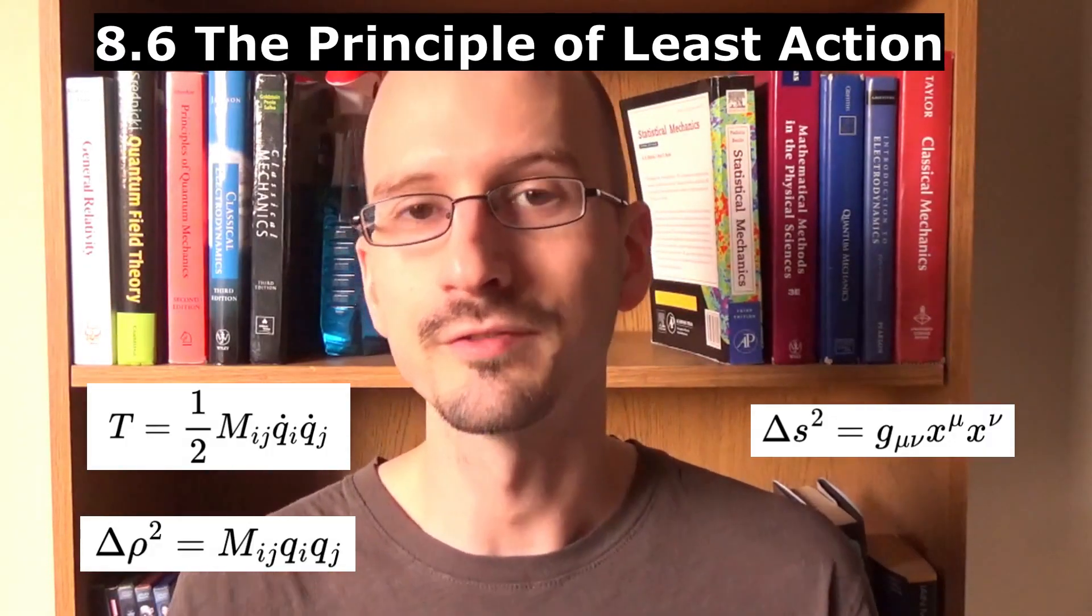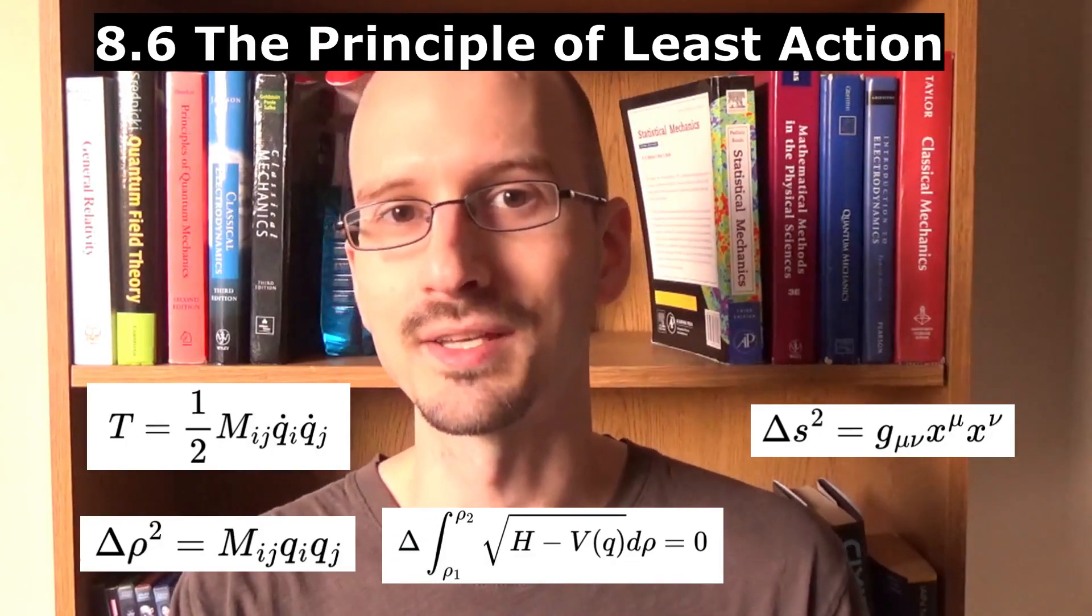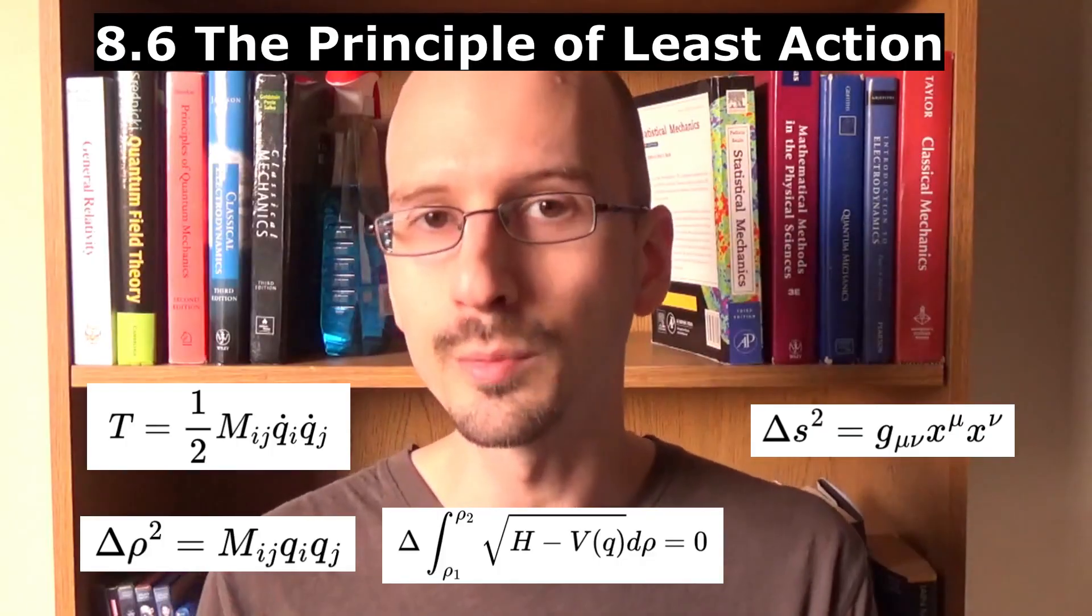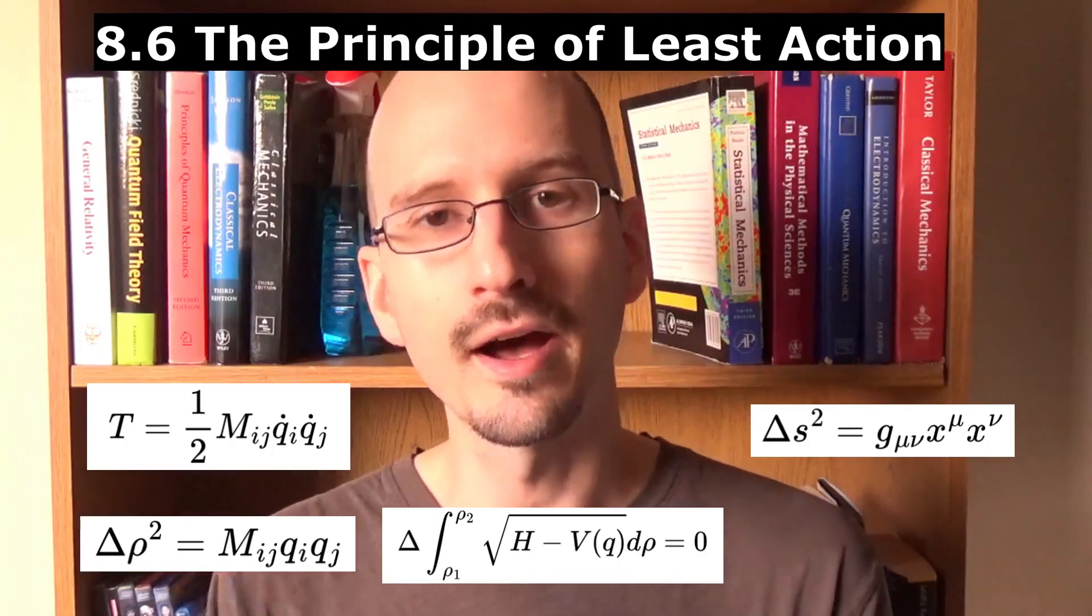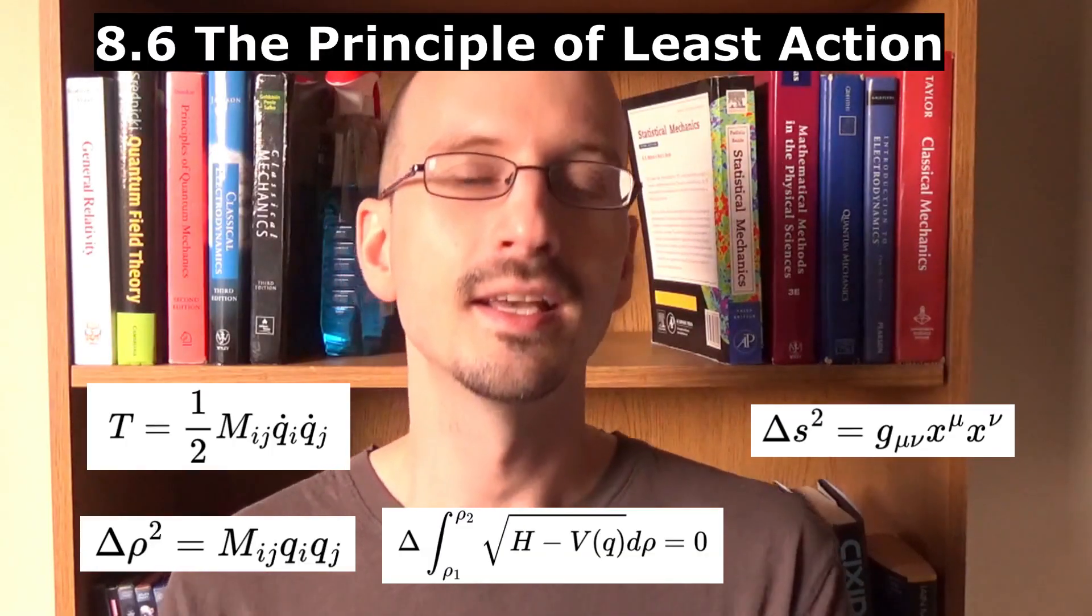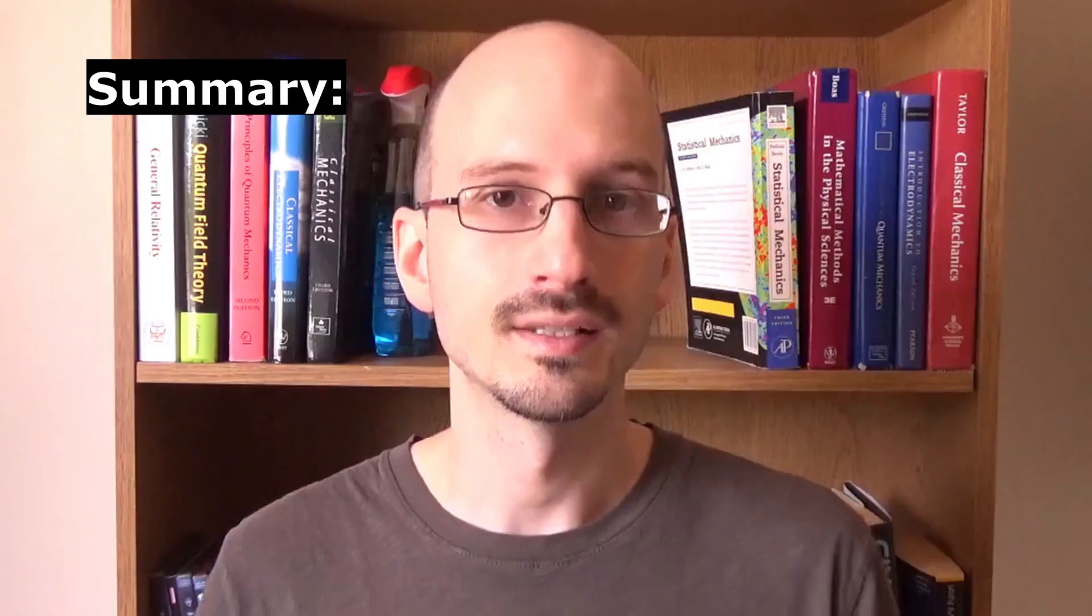And by changing variables, we can rewrite the principle of least action in terms of the phase space interval. This is Jacobi's version of the least action principle. And it tells us that like objects in general relativity, systems move on geodesics through phase space.